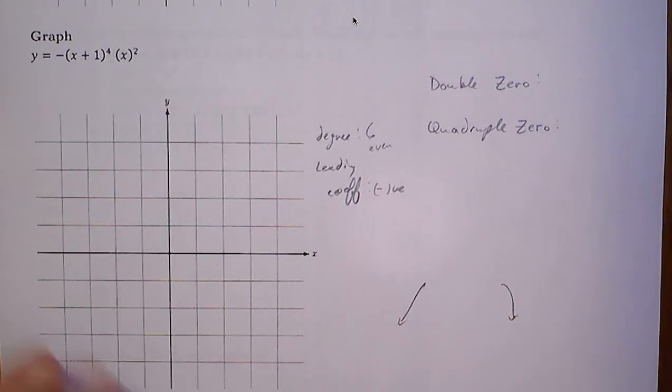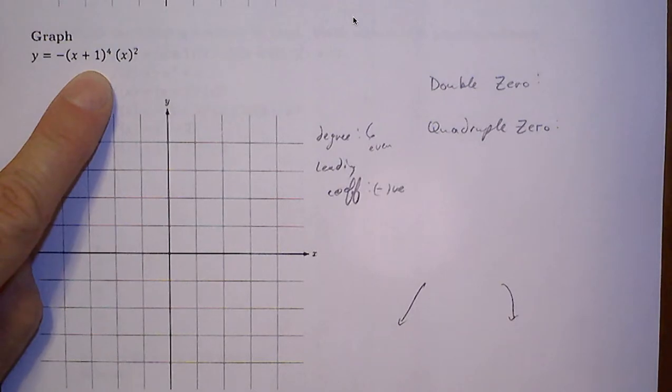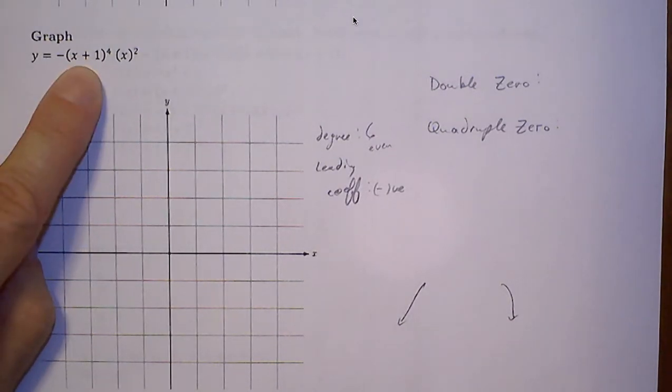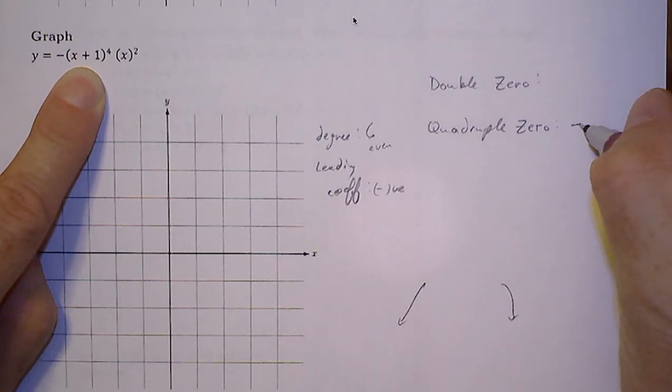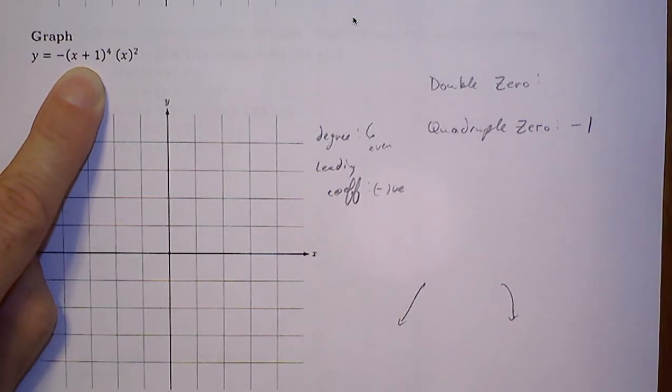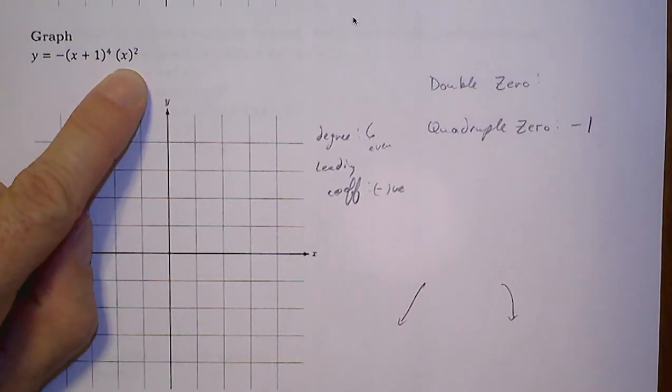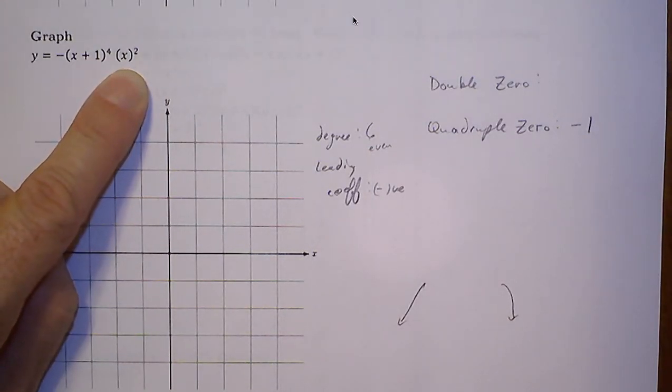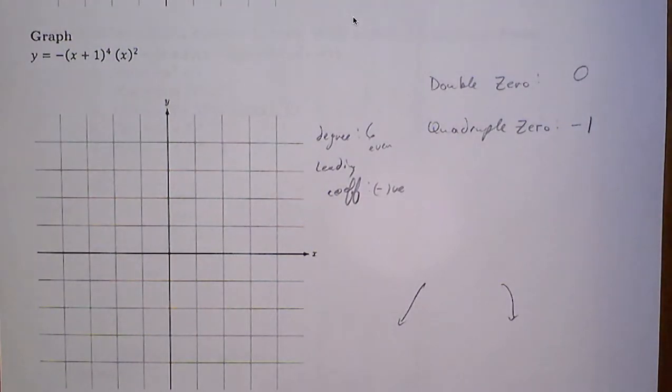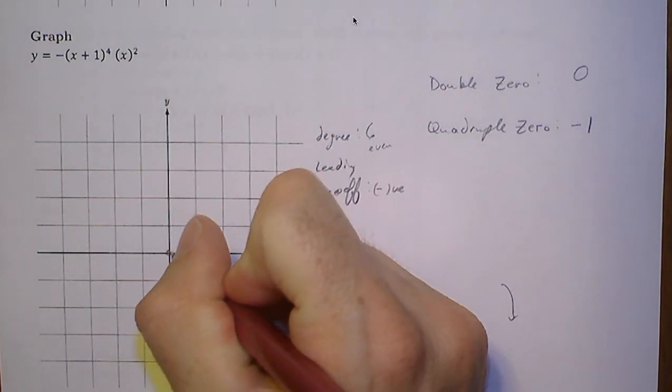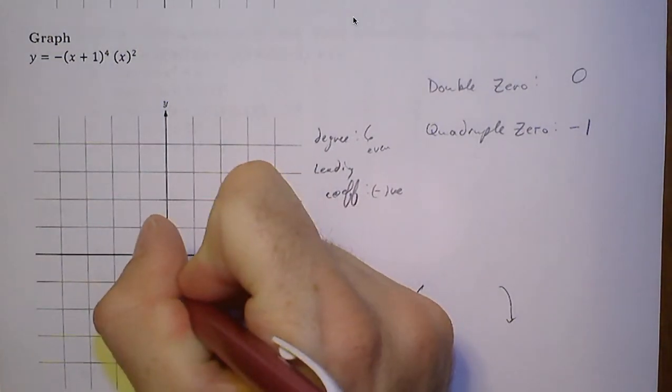I'm going to look at my function here. I have a quadruple zero. Wow. When is this factor equal to 0? When x is equal to negative 1. This factor is going to be a double zero because of the exponent. When is this factor equal to 0? At 0. This is going to be a super strange graph in real life. But thankfully, we are just making a sketch of it.